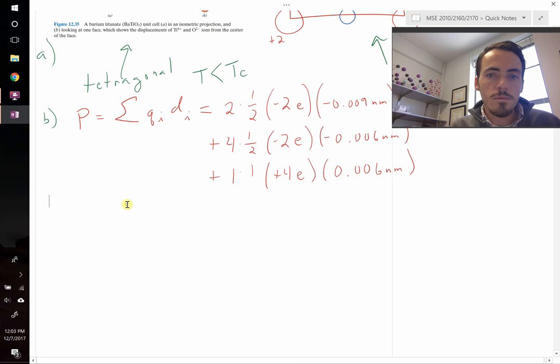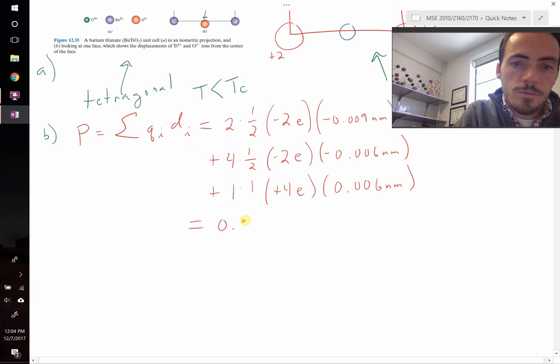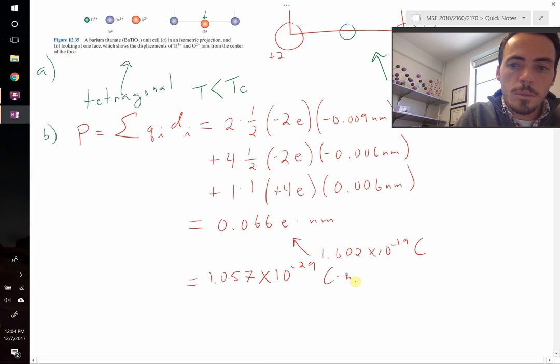So we can add all those up. Let's do so. When I add those up, I get the following. I find that it's equal to 0.066 times the charge of an electron times nanometers. When we plug in the charge of an electron, which is just 1.602 times 10 to the negative 19th coulombs, then this tells me that our total polarization per unit cell is going to be 1.057 times 10 to the negative 29 coulomb meters. So I moved it out of nanometers into meters. That's more convenient unit. So that is the polarization per unit cell.